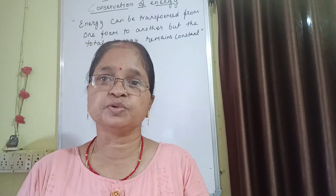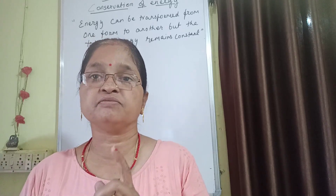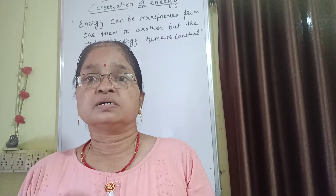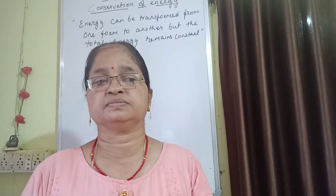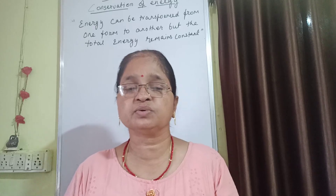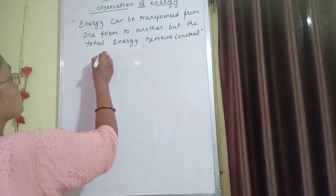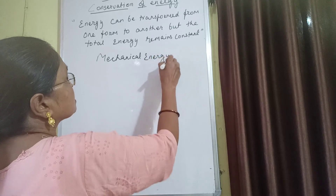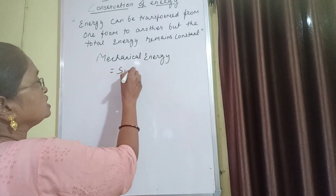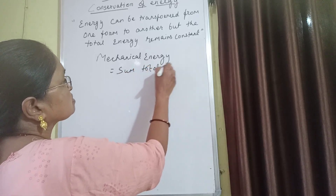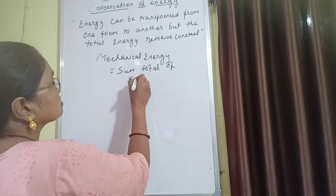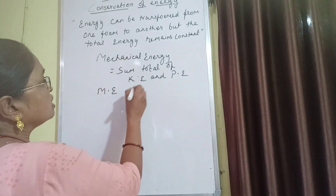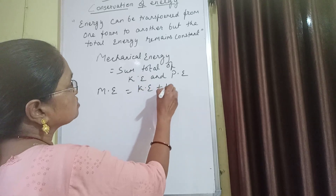How do we prove it? Today I am discussing only one case to prove this. Let us discuss the total energy for a freely falling body. First, we try to understand what mechanical energy is. Mechanical energy is the sum total of kinetic energy and potential energy. So I am writing: mechanical energy ME equals kinetic energy plus potential energy.